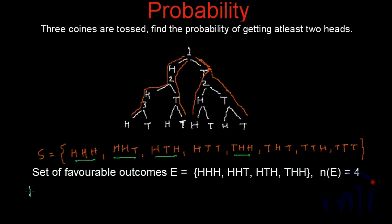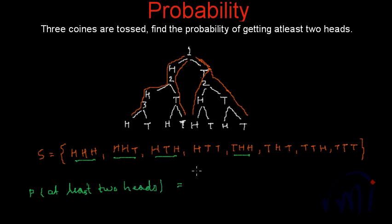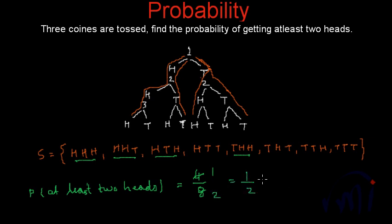So the probability of getting at least 2 heads is equal to 4 by 8 — 4 is the total number of favorable outcomes and 8 is the number of all possible outcomes. Solving this: 4 divided by 8 equals 1 by 2, or 0.5.